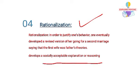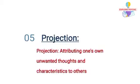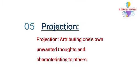After rationalization, we have projection. Projection is when a person has their own unacceptable desires or impulses and attributes or projects those feelings onto someone else, rather than acknowledging them as their own.